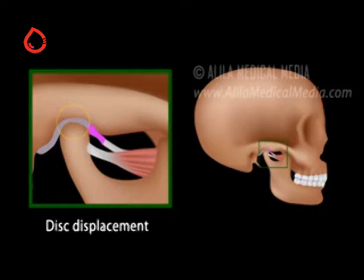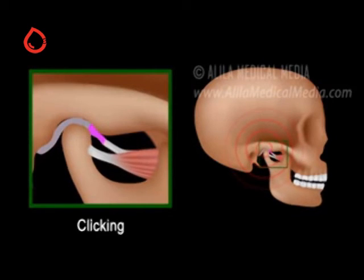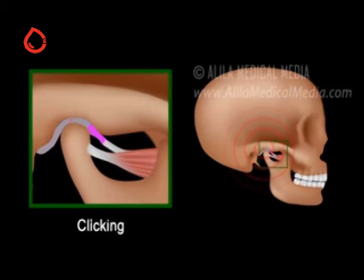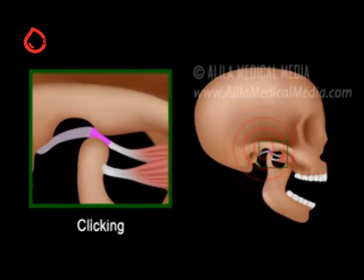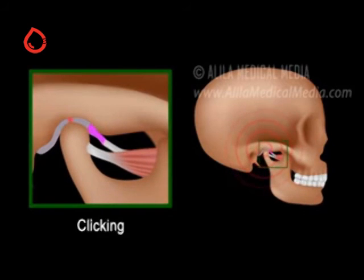The forward dislocated disc forms an obstacle for the condyle movement when the mouth is opening. In order to fully open the jaw, the condyle has to jump over the back end of the disc and onto its center. This produces a clicking or popping sound. Upon closing, the condyle slides back out of the disc, hence another click or pop. This condition is called disc displacement with reduction.